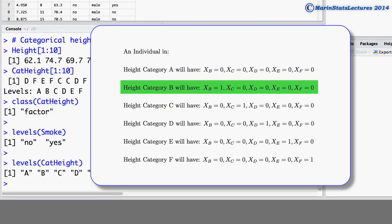An individual in height category B will have xB equal to 1 and xC, xD, xE, and xF all equal to 0. An individual in height category C will have xC equal to 1 and all other x indicators equal to 0. Same for category D, category E, and category F.